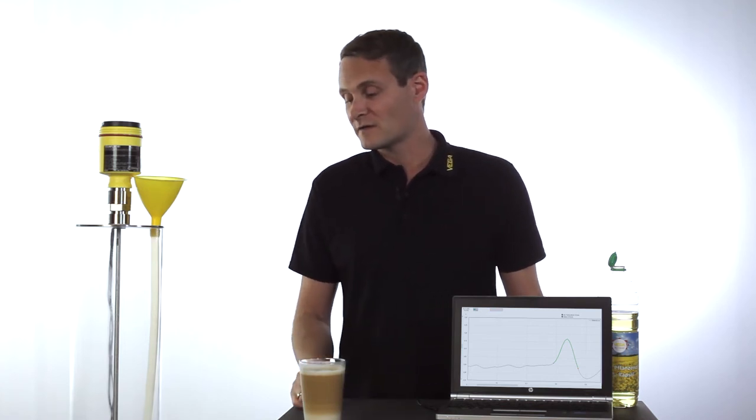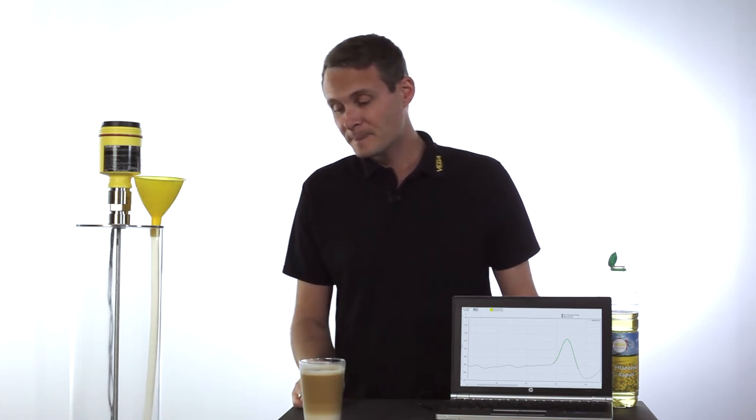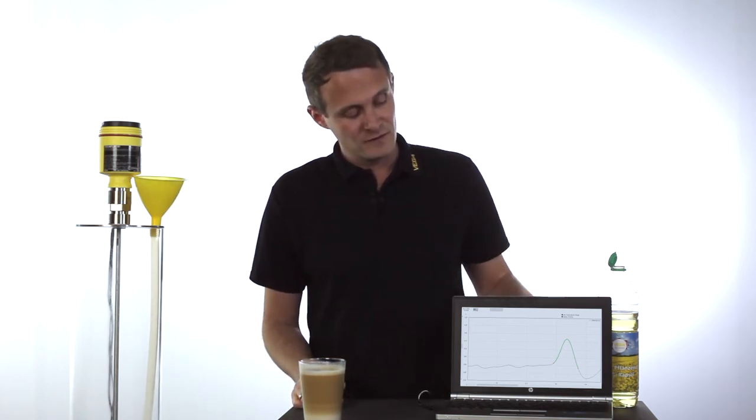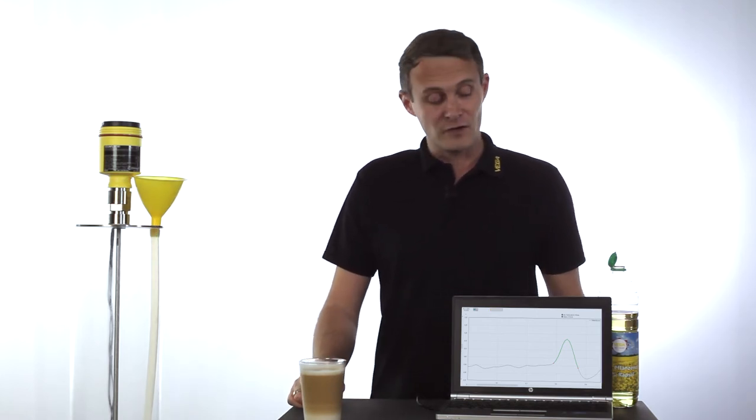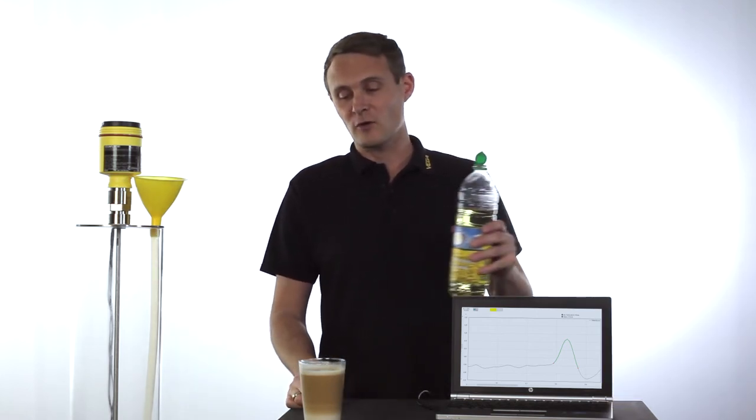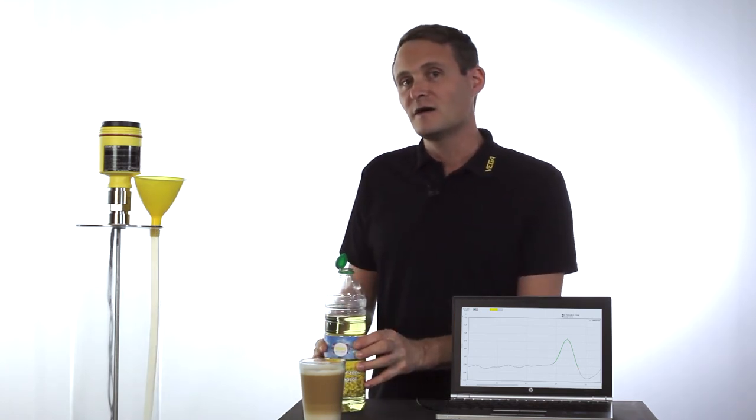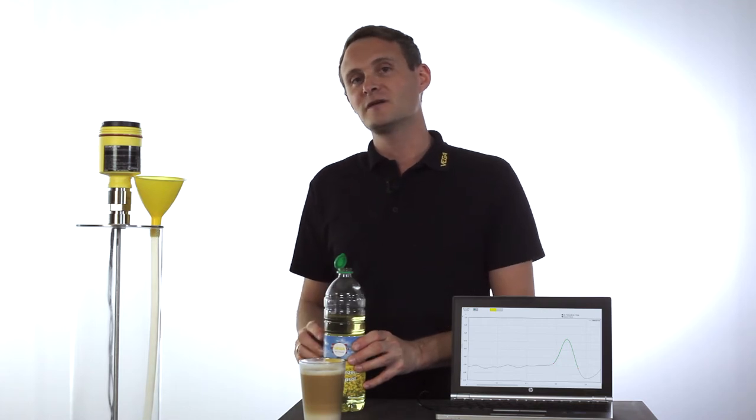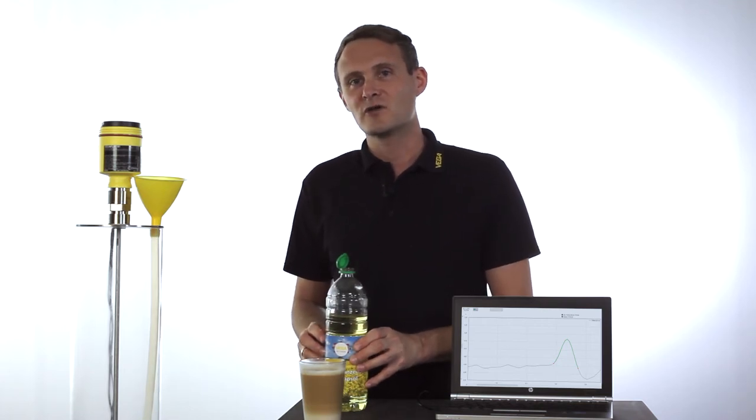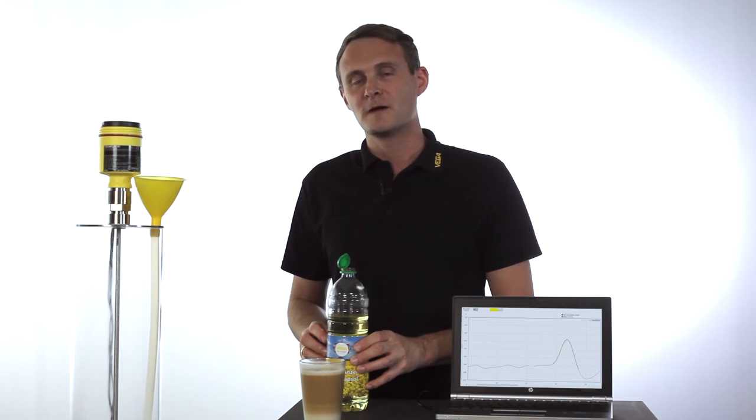At the moment this tank is just filled with water, and on the echo curve you can see the amplitude for the water level. We will now start to pour some oil into the tank additionally and see how thick the layer of oil has to be so that it can be distinguished from the water. Typically an oil layer of minimum 10 centimeters is necessary. Let's see how much oil we need for the VegaFlex 80.